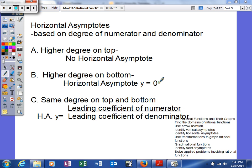Next we're going to talk about how to find horizontal asymptotes. To find our horizontal asymptotes, we're going to be looking at the degrees of the numerator and the degree of the denominator.